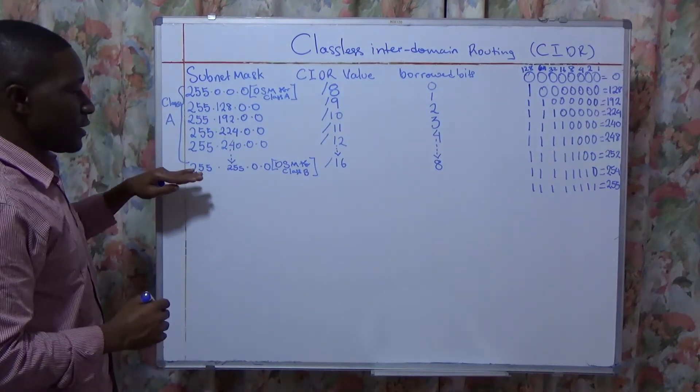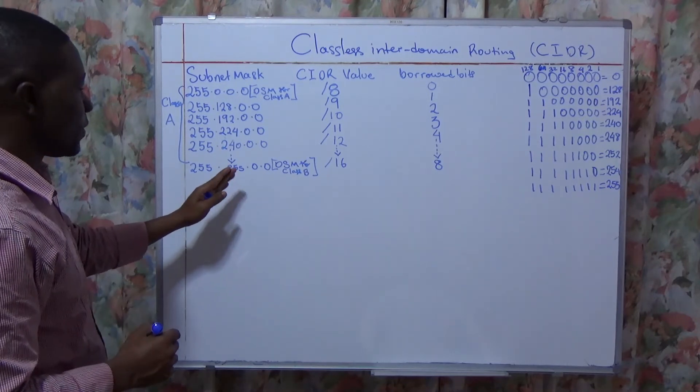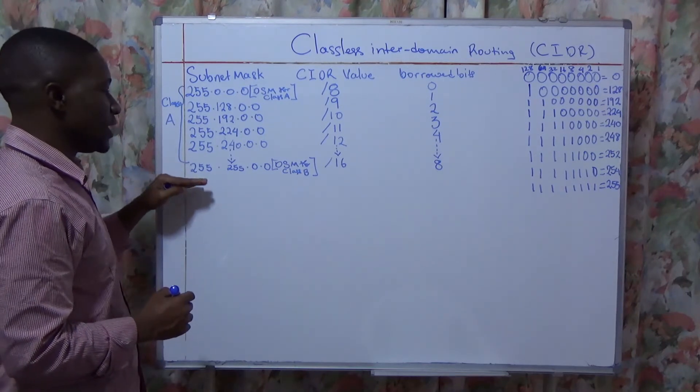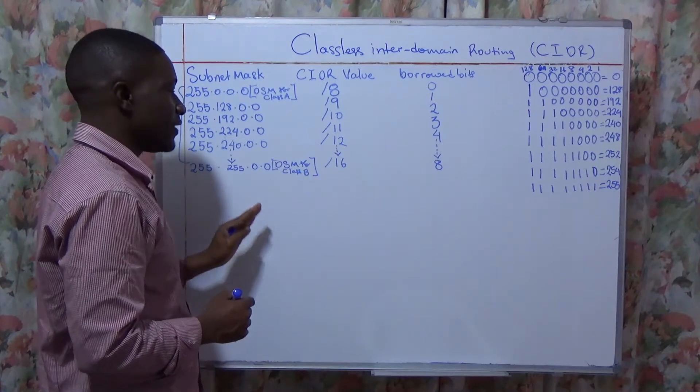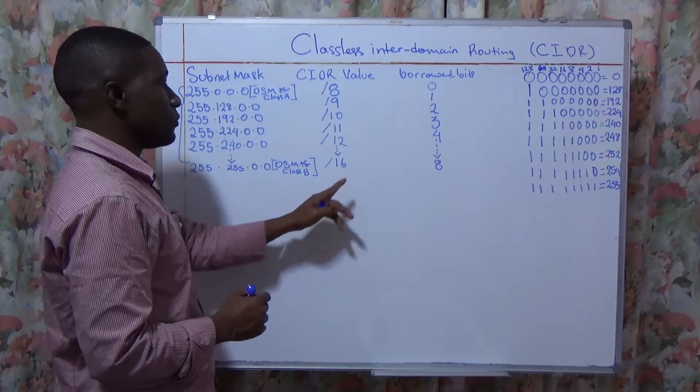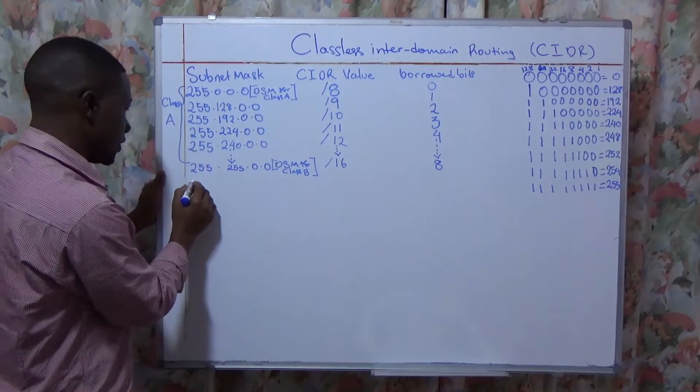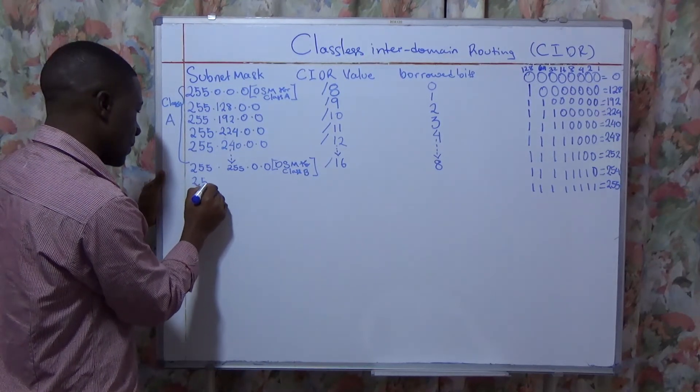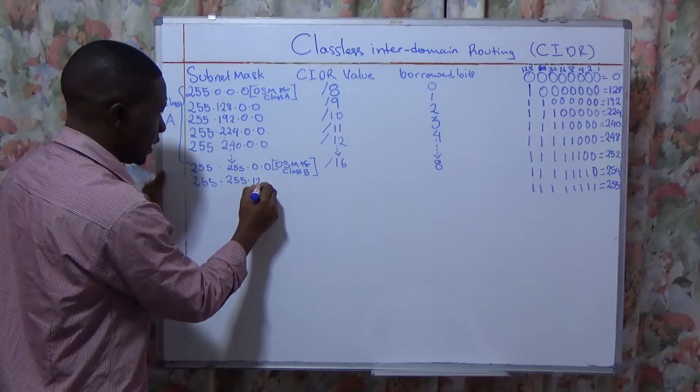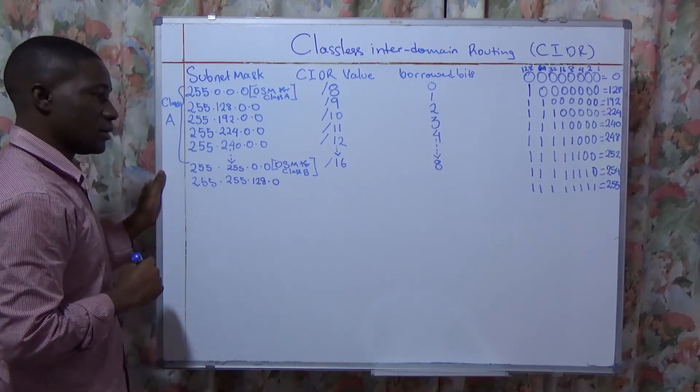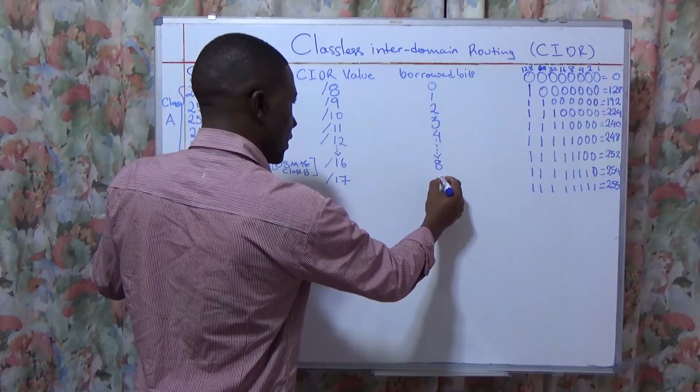Now when all the octets are full, the first octet is full and the second octet is now full, we automatically go into Class B. And the default subnet mask for Class B is 255.255.0.0, and that will mean that the CIDR value for Class B will be /16. Now let us still convert and see at this level: 255.255.128.0, and this will be /17, and that will mean the borrowed bits are 9.